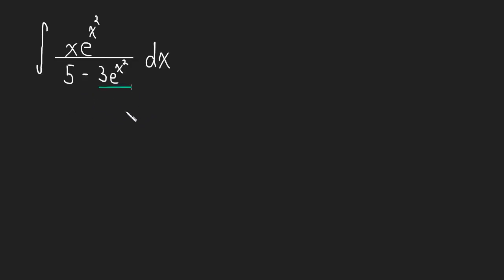The derivative of e to the x squared—let's forget about the constant because we can always adjust for constants. The derivative of e to the x squared is e to the x squared times 2x. Derivative of the outside, repeat the inside, times the derivative of the inside. Simple chain rule.